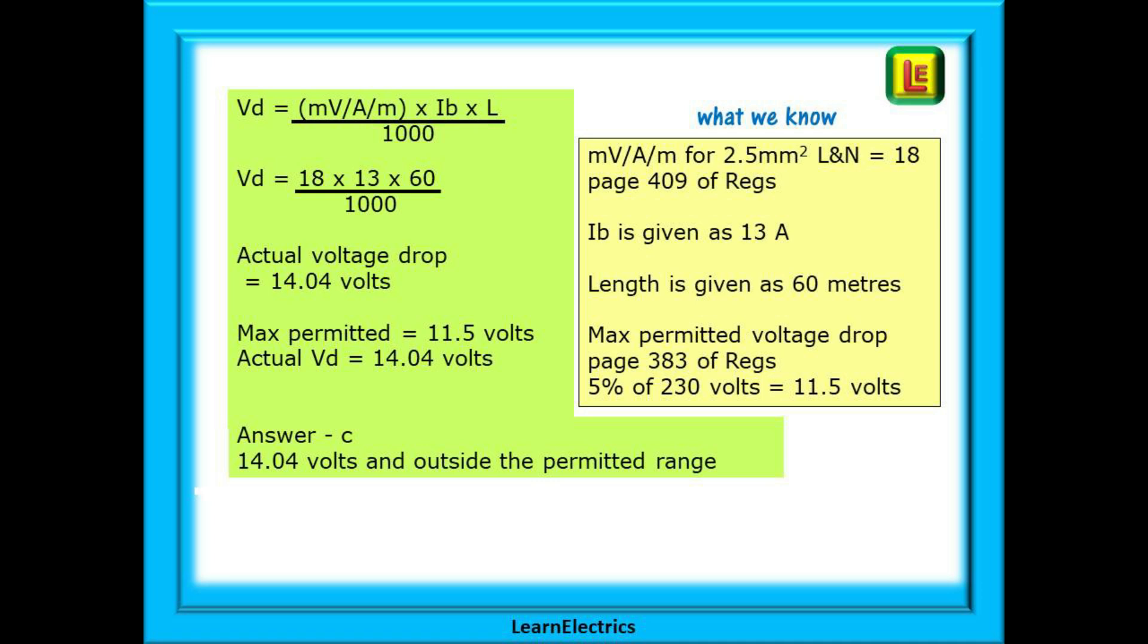The MVAM number is found on page 409 of the regulations in the rightmost column. For 2.5 millimeter line and neutral this is the number 18. IB has been given as 13 amps and the length is 60 meters. Because the MVAM number millivolts per amp per meter is in millivolts we must divide by 1000 to find the actual volts. When we complete the calculation as shown we have 14.04 volts. Clearly this exceeds the maximum permitted voltage drop of 11.5 volts and our answer should be choice C, 14.04 volts and outside the permitted range.